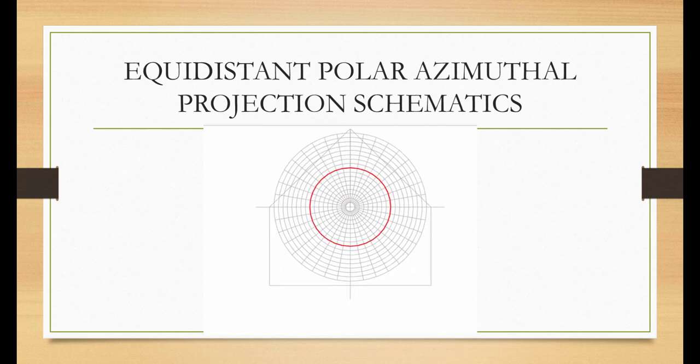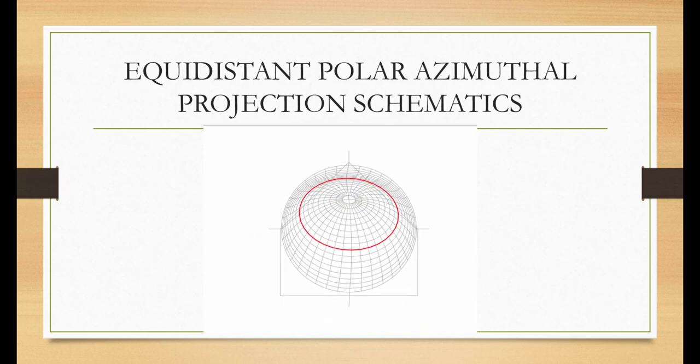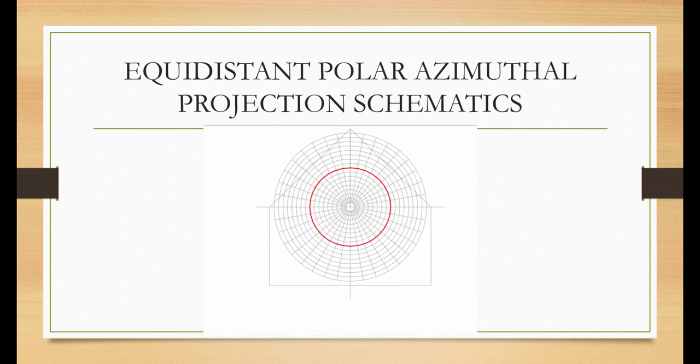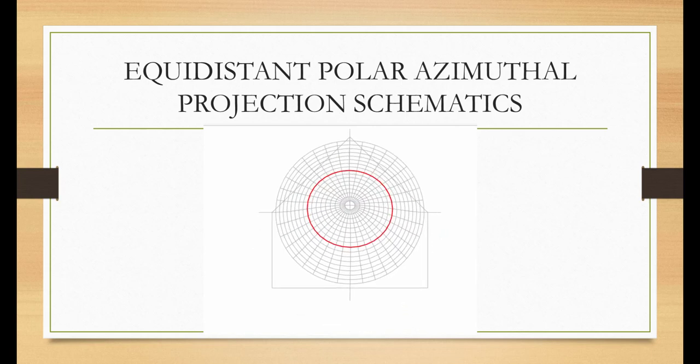The polar equidistant projection has the following parameters: longitude of natural origin, latitude of natural origin, false easting, and false northing.